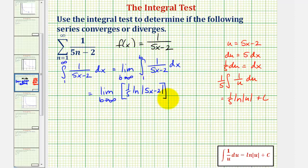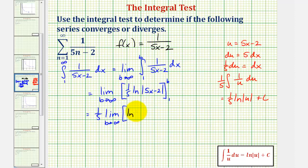And the interval is from one to b. Let's factor out the one-fifth and write this as one-fifth times the limit as b approaches infinity. When x equals b, we'd have natural log of the absolute value of five b minus two. And when x is one, we'd have natural log of the absolute value of five times one minus two, or three.